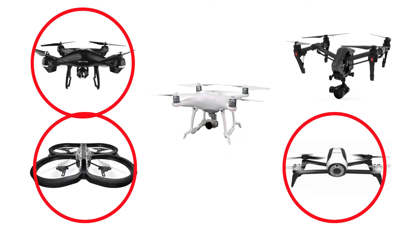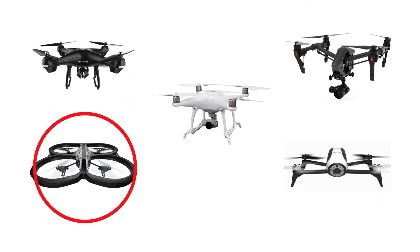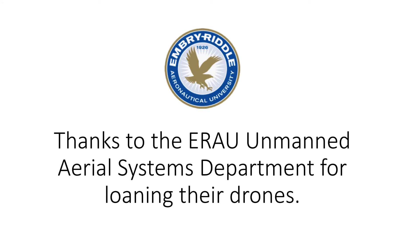Here are some of the drones we used for our research. In the upper left-hand corner is a Holley Stone drone, the bottom left is an AR Drone 2—a Parrot drone—and on the right circled is a Parrot Bebop drone. For today's video I'm only going to talk about the Parrot AR Drone 2, because each drone had vulnerabilities but the AR Drone had the most. Thanks to the Embry-Riddle Aeronautical University Unmanned Aerial Systems Department for loaning their drones for this research.